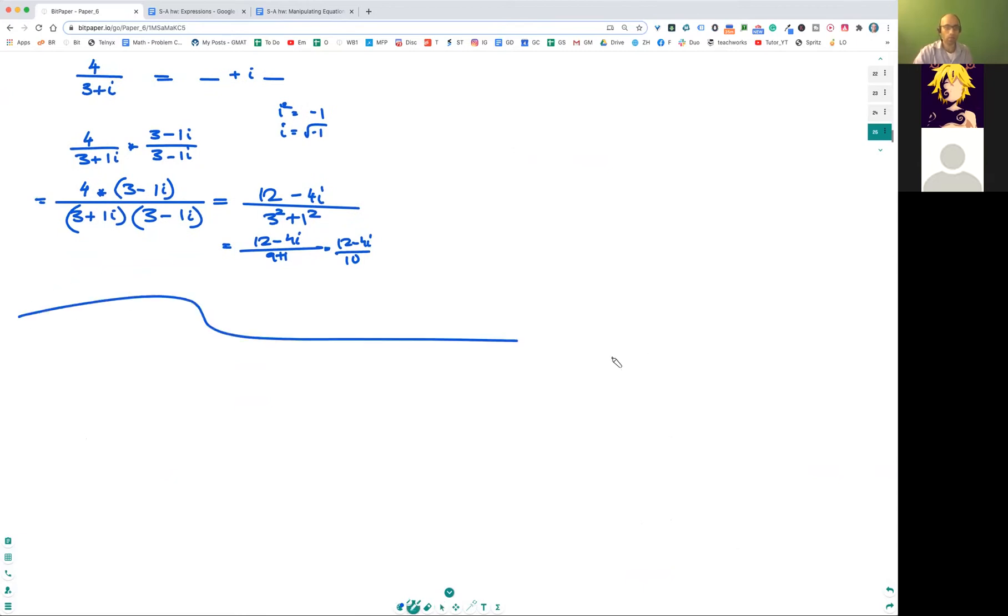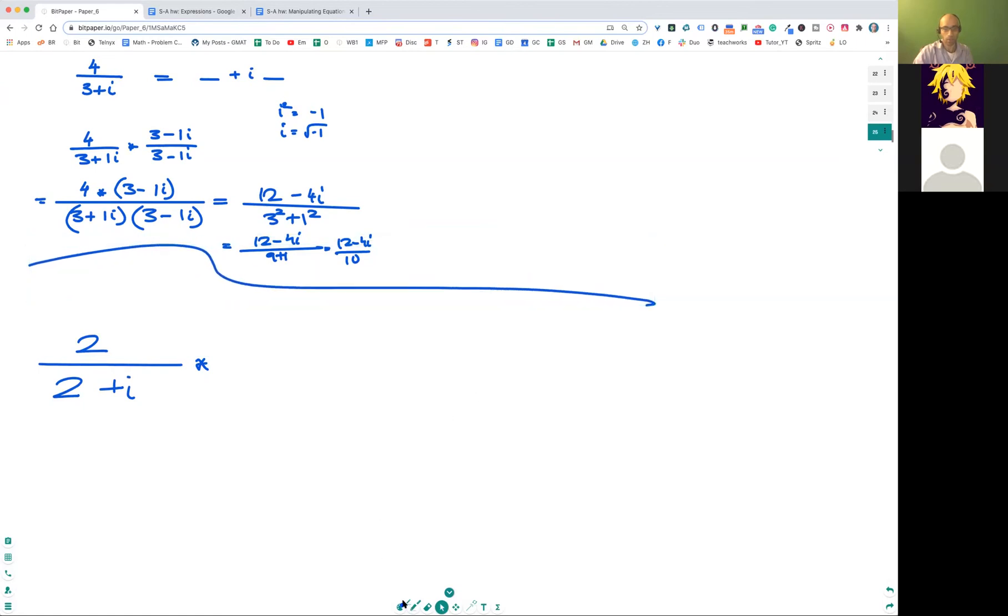And let's try to solve a very similar problem. Remember, all you got to do is multiply this by the conjugate, which means you're gonna use a negative. So let's try this problem. Let's try 2/(2+i). So remember, you want to multiply both sides by the conjugate. So you multiply by (2-i)/(2-i).